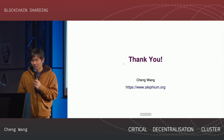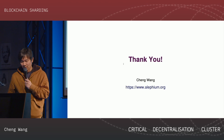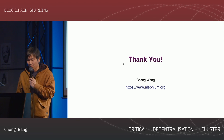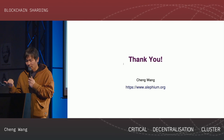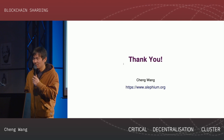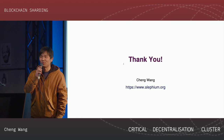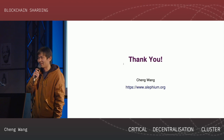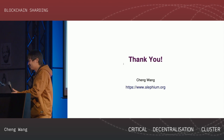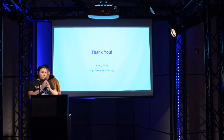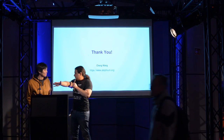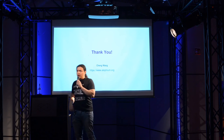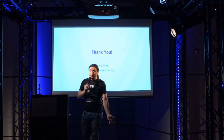That's all. If you are interested in more details, you can go to our website or follow me on Twitter and ask me questions. Tomorrow I have another talk about how to reduce the energy consumption of proof of work, so please come and have a look. Thank you very much. Cheng will be available to take questions off stage. We're going to get set up for our next talk, which is Monero-Bitcoin atomic swaps.